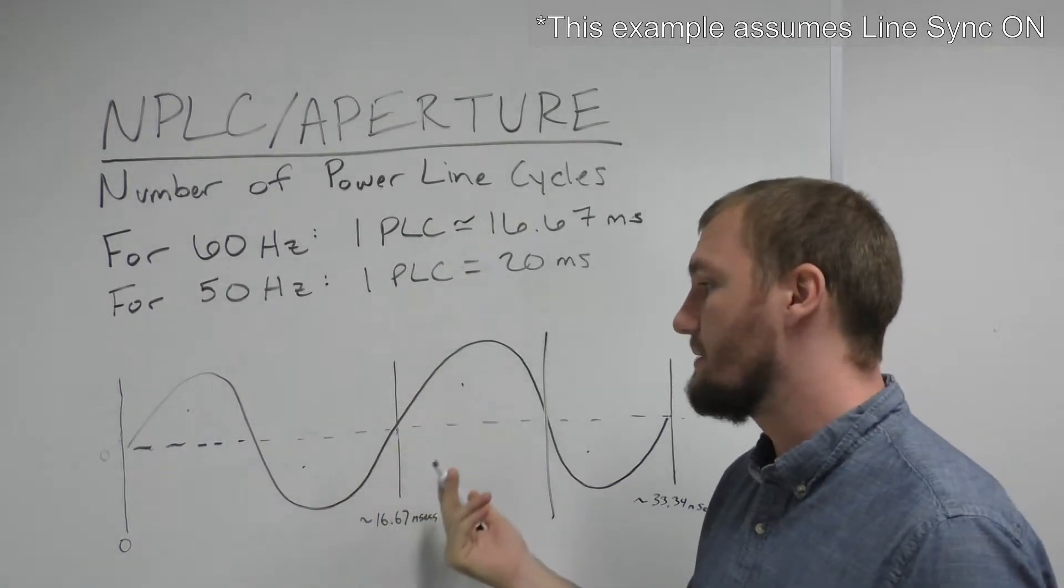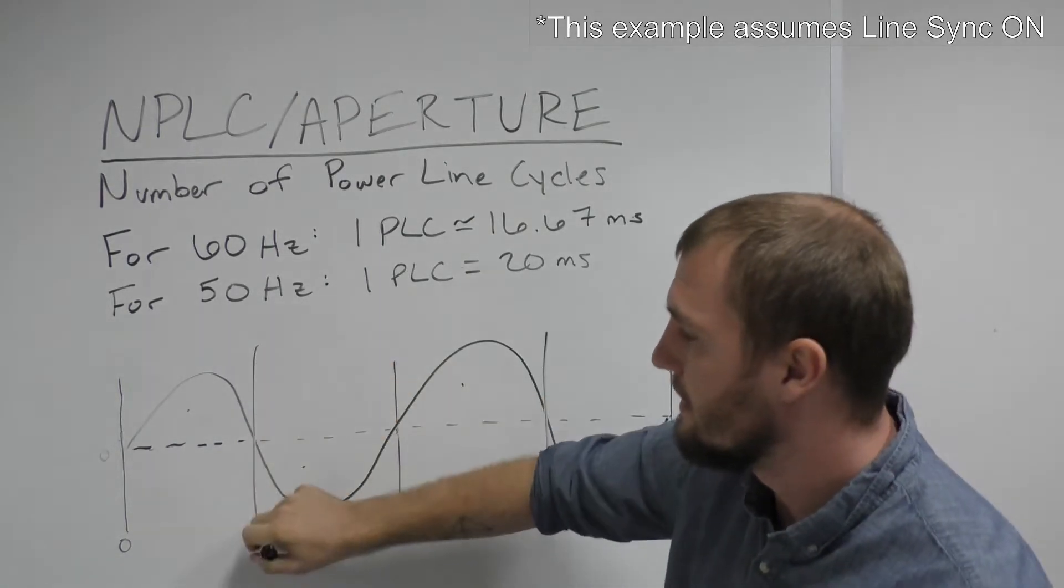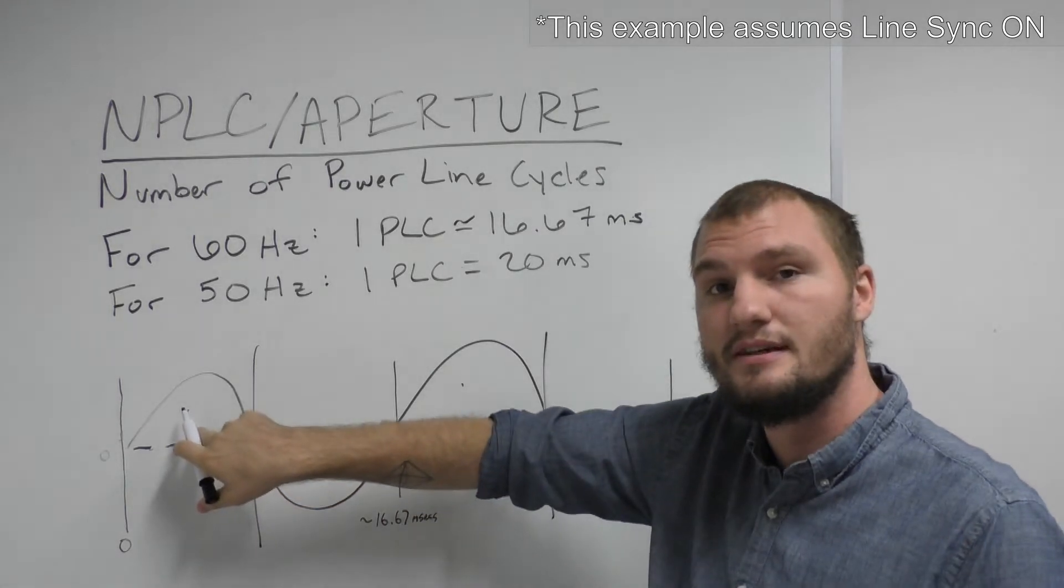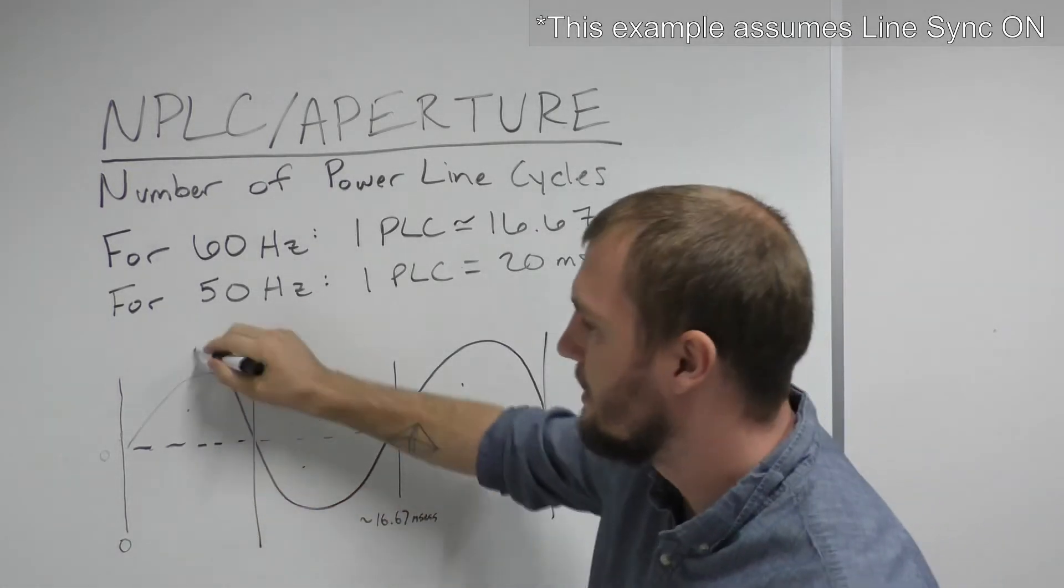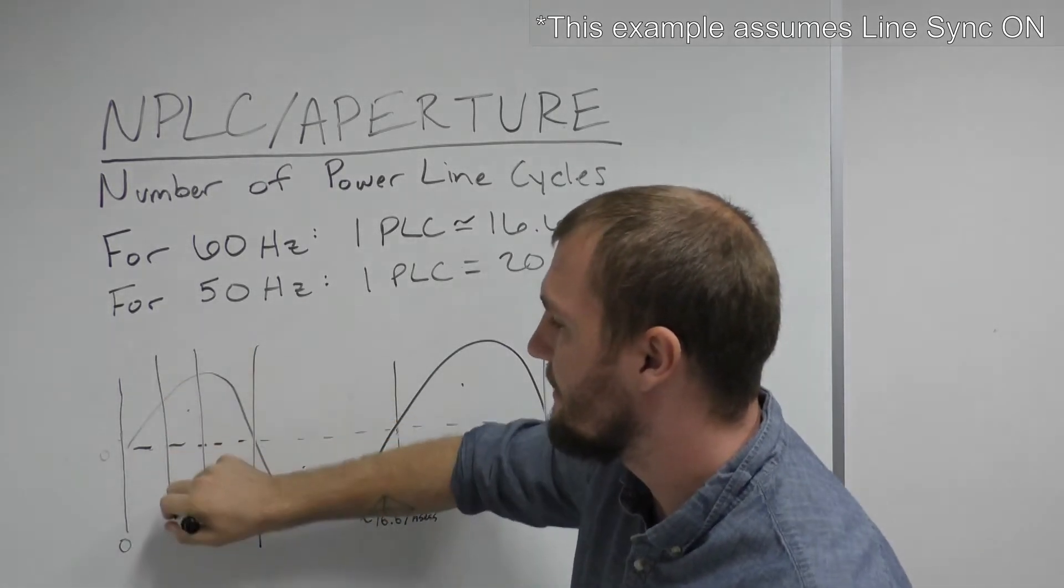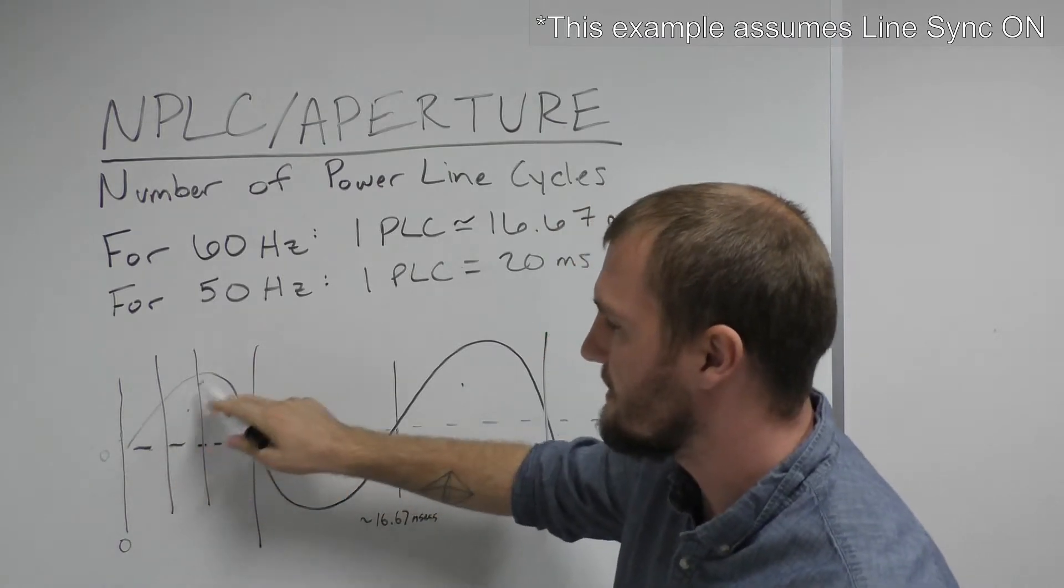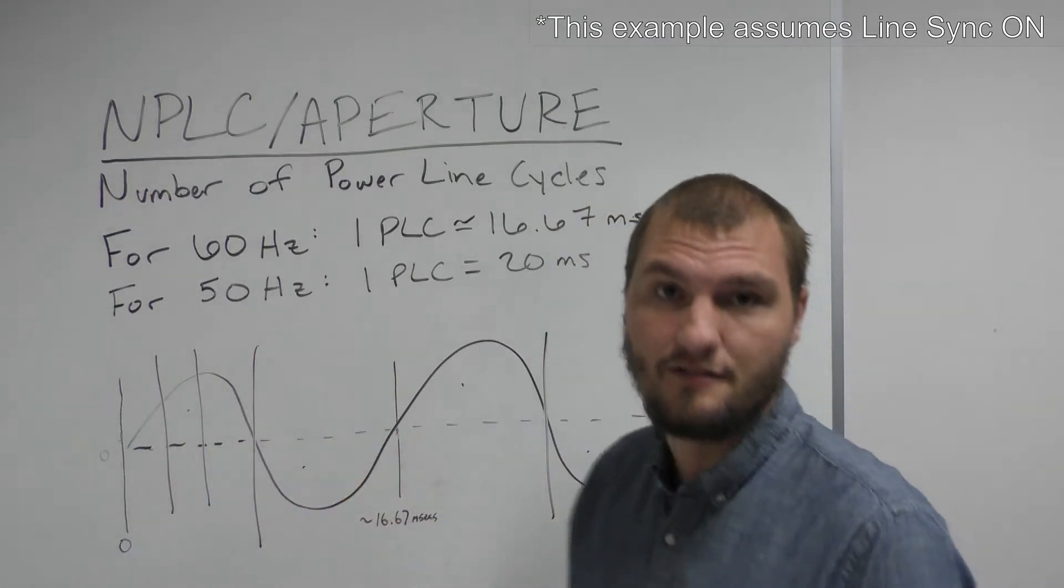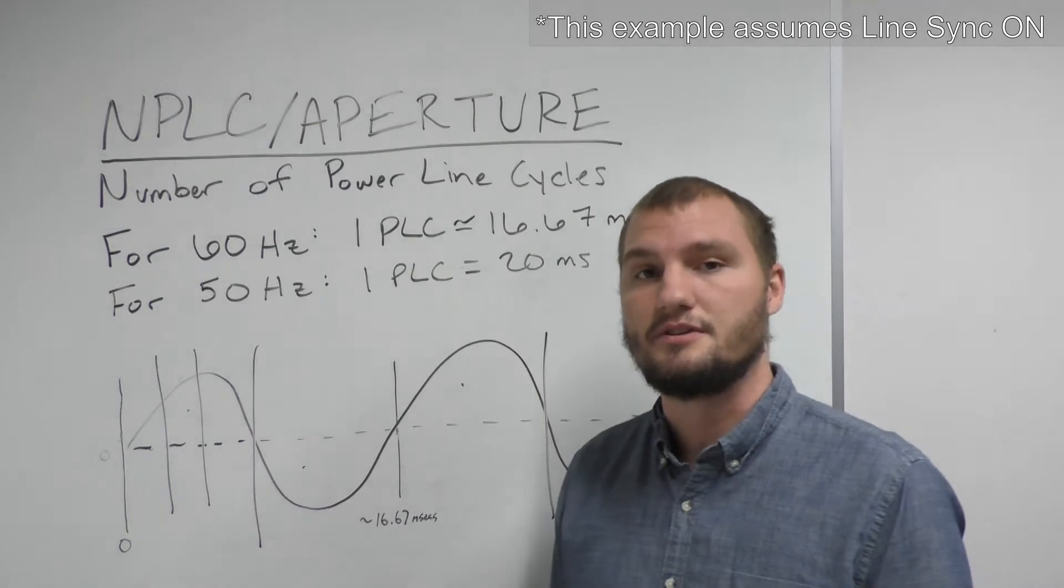If you go even lower to something like 0.5 then you're getting only positive noise and once you get down to a quarter or an eighth you can see that it has much more effect on each individual measurement and you're going to get a very variable amount of power line noise per measurement.